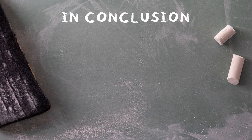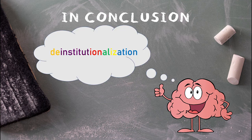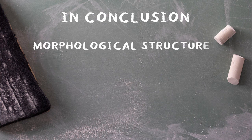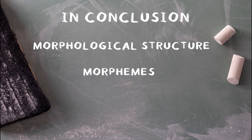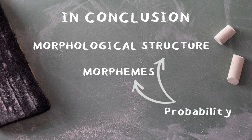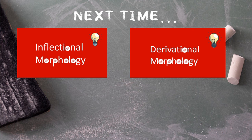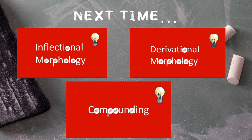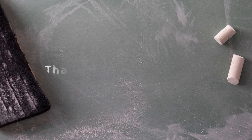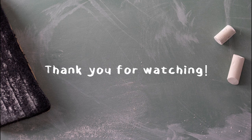In this video, we've looked at how our minds recognize patterns within words and use these patterns to construct meaning. These patterns are called morphological structure, and the parts that make up the structure are called morphemes. We also looked at how this system relies on probability to identify morphemes and morphological structures. In the next three videos, we'll go over three broad categories of morphology: inflectional morphology, derivational morphology, and compounding. If you have any questions or requests, please leave them in the comments, and thanks for watching.